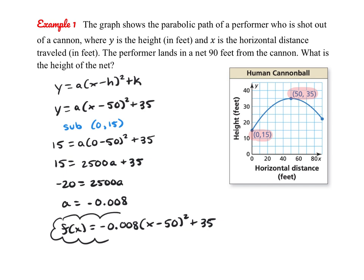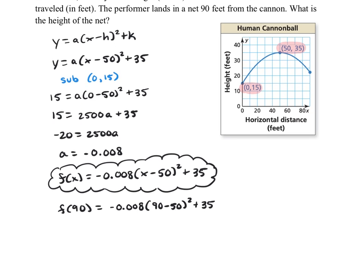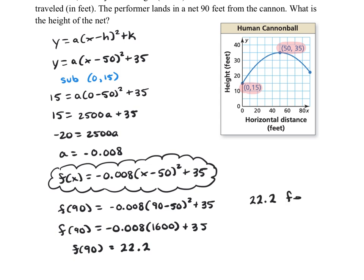So our model is f(x) equals negative 0.008 times (x minus 50) squared plus 35. Now that we have a model, we can answer the question: what is the height of the net that is 90 feet horizontally from the cannon? We're finding f(90), so we substitute that into our equation and simplify. We get 40 squared, which is 1,600, and f(90) equals 22.2. We always want to include units in our final answer, so the height of the net is 22.2 feet.